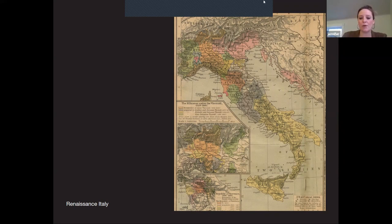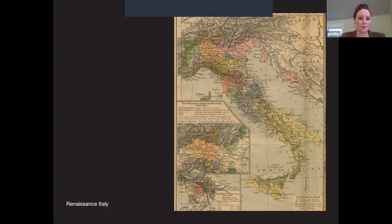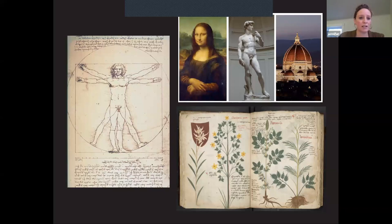We don't know the exact impetus of the Renaissance, but many scholars believe there was a lot of economic instability coming out of the Middle Ages without many investment opportunities, so wealthy families like the Medici decided to fund the arts. This had a really profound influence on painting, sculpture, and architecture. In the 15th century there was also a renewed interest in classical ideas and the study of the humanities.